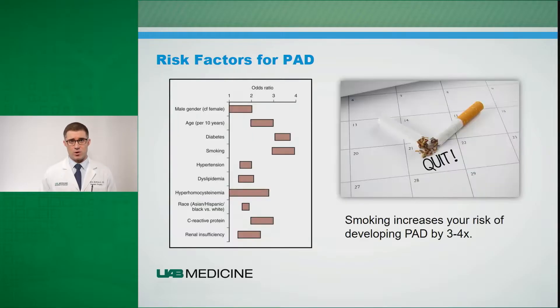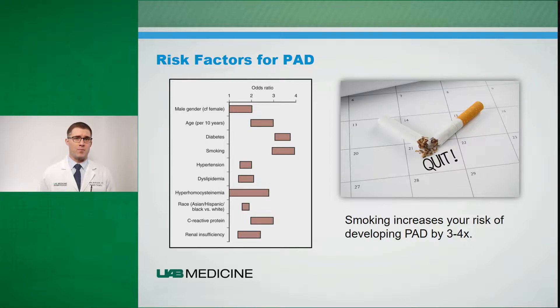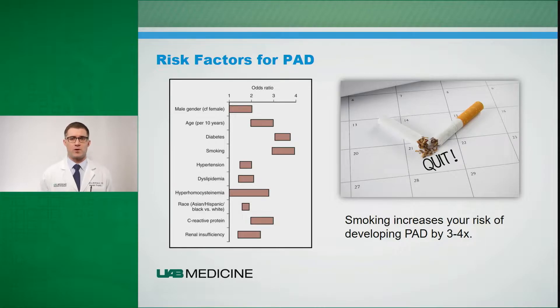Smoking and diabetes are highlighted because those that have diabetes or those that smoke have three to four times the risk of developing peripheral arterial disease as compared to the general population.